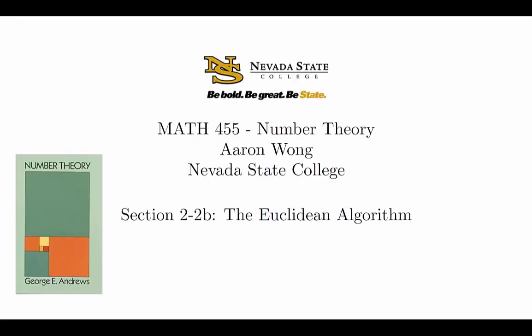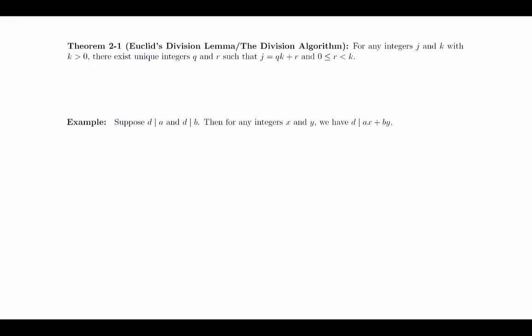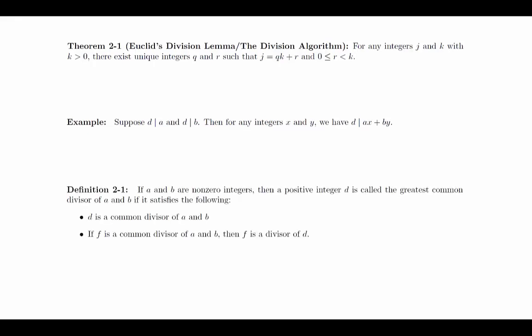Let's quickly review a couple facts before we get to the Euclidean algorithm. We will start with the division algorithm, which is called Euclid's division lemma in this book: for any integers j and k with k greater than 0, there exist unique integers q and r such that j equals q times k plus r and 0 is less than or equal to r less than k. There was also an example in the previous video that will be relevant here: if d divides a and d divides b, then for any integers x and y, we have d divides ax plus by. Lastly, we will review the definition of the greatest common divisor: if a and b are non-zero integers, then a positive integer d is called the GCD of a and b if d is a common divisor of a and b, and if f is a common divisor of a and b, then f is also a divisor of d.